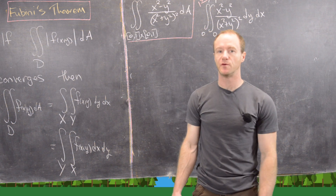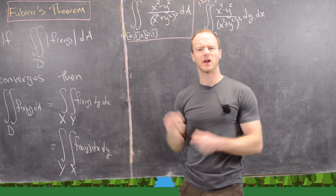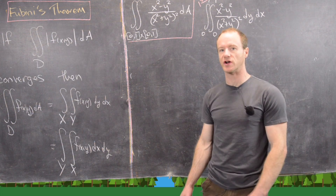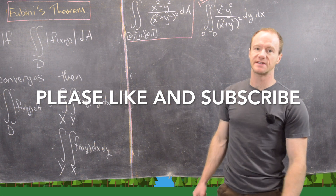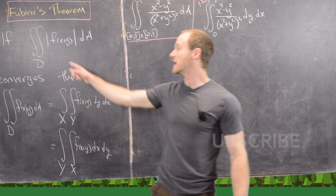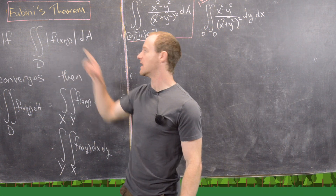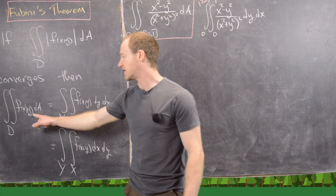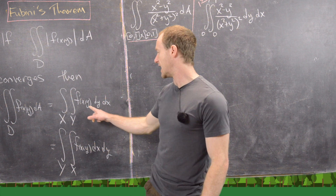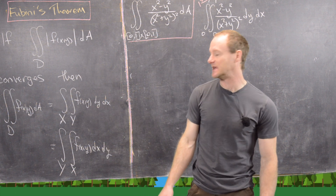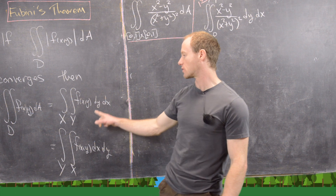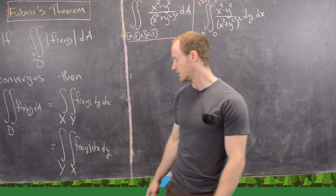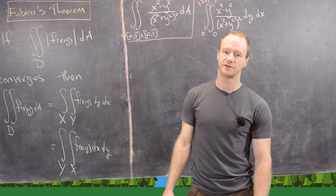In this video we're going to explore Fubini's Theorem and look at what it really takes to be able to exchange the order of integration via an example. Fubini's Theorem says the following: if the integral over D of the absolute value of a function converges, then we can take that double integral over D and exchange the order of integration as needed — doing the y-integral first and the x-integral second, or vice versa.